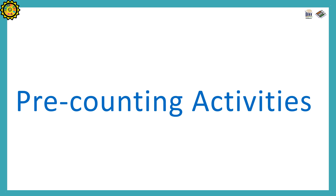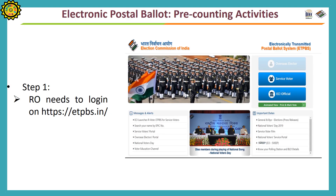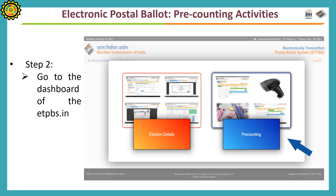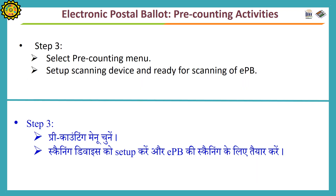Pre-Counting Activities. First, the returning officer has to login on the E-TPBS portal. After login, the dashboard shown on the screen will be displayed. The returning officer has to click on the pre-counting button, select it, set up scanning devices, and be ready for scanning the E-Poster Ballot.